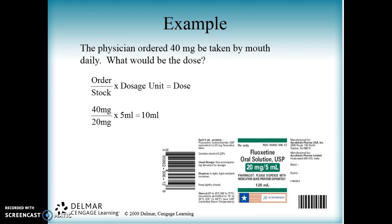On the bottom is the strength based on whatever's on your shelf. We cannot change what's on our shelf — it is what it is. When we go to the shelf, we see the label for the fluoxetine, and it comes 20 milligrams per 5 milliliters. So the 20 milligrams goes on the bottom because that's our stock, and the dosage unit is that 5 milliliters — that's what the medicine comes in. Then we do the math: 40 divided by 20 is 2, and 2 times 5 is 10.